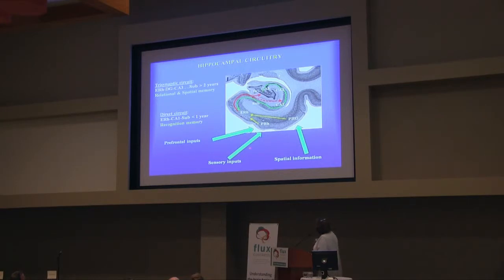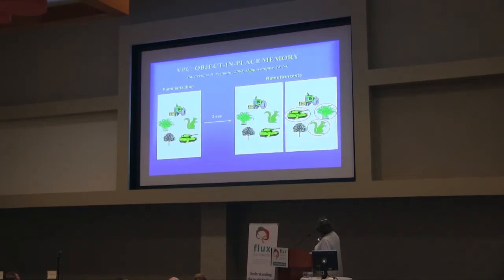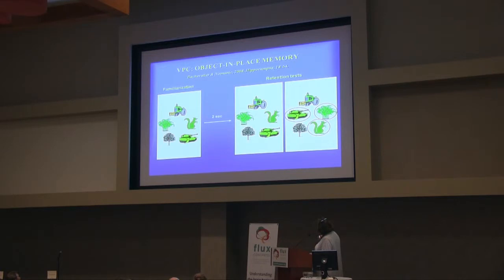The idea was that maybe this recognition memory that develops around the first year of age — what would happen with relational memory? We wanted to use the same paradigm because it allows us to test very young baby monkeys, but we had to make a task that assesses spatial memory in monkeys. The comparison is an image with five small items, and in the novel image the items are exactly the same, but three of them have changed location — so the animal has to remember the location of each item relative to the others.